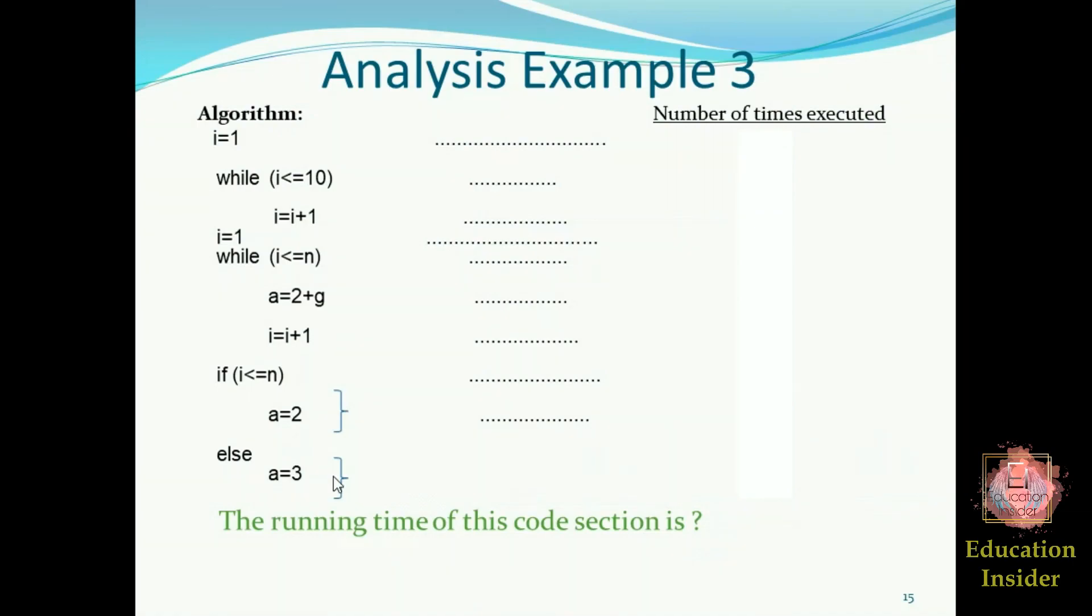So these are all line-by-line analysis that we have done. After adding up all these, we get the running time as 3n plus 24.